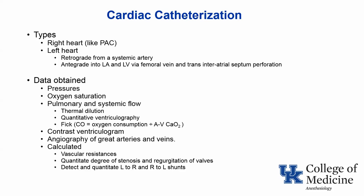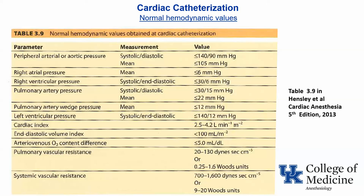Numerous bits of information are provided by cardiac catheterization, including pressure data, oxygen saturation data, measurements of pulmonary and systemic flow, performance of contrast ventriculograms and angiograms of both the great arteries and veins, calculating vascular resistance, the degree of valve stenosis and regurgitation, and detecting and quantifying left-to-right and right-to-left shunts. This table from Hensley's book gives normal values for pressures, cardiac output, end-diastolic volume index, AVO2 difference, and vascular and systemic resistances.